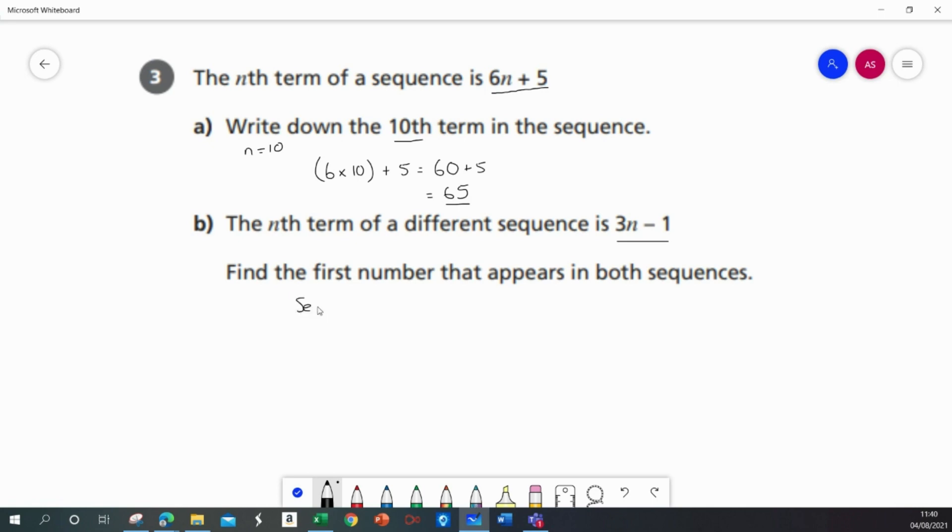So for sequence 1, which is 6n plus 5. The first term would be 6 multiplied by 1, which is 6 plus 5, 11. The second term, 6 multiplied by 2 is 12 plus 5 is 17.